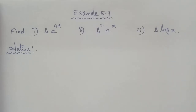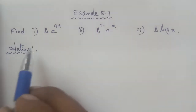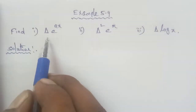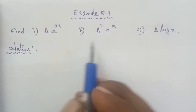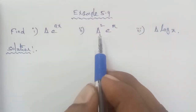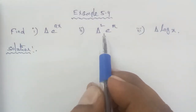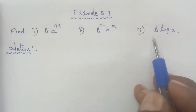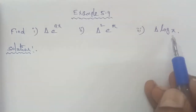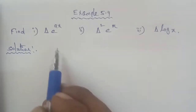Hi students, I am Opinak. 12th Business Math, Example 5.4. Find: Subdivision 1 - Delta e power of x, Subdivision 2 - Delta square e power of x, Subdivision 3 - Delta log x.